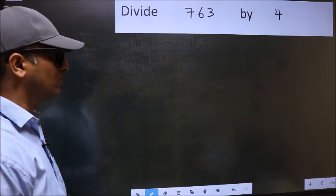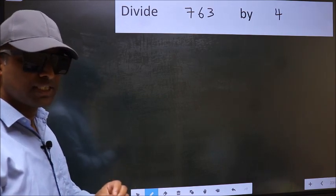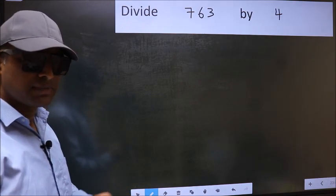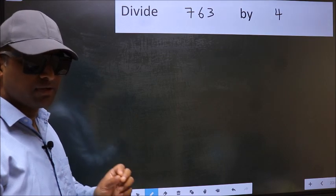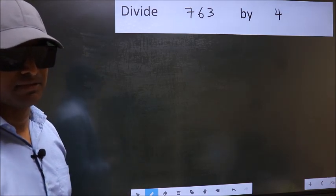Divide 763 by 4. While doing this division, many do this mistake. What is the mistake that they do, I will let you know. But before that, we should frame it in this way.